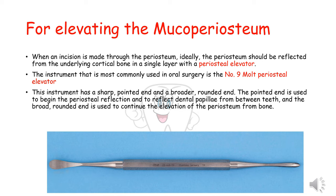Now the instruments for elevating the mucoperiosteum. When an incision is made through the periosteum, ideally the periosteum should be reflected from the underlying cortical bone in a single layer with a periosteal elevator. The instrument most commonly used in oral surgery is the number 9 mold periosteal elevator. This instrument has a sharp pointed end and a broader rounder end. The pointed end is used to begin the periosteal reflection and to reflect the dental papilla from between the teeth, and the broad rounded end is used to continue the elevation of the periosteum from bone.